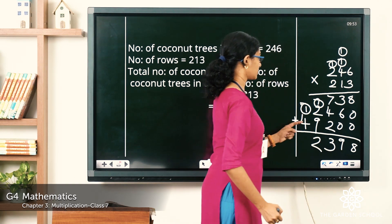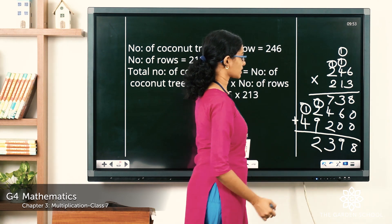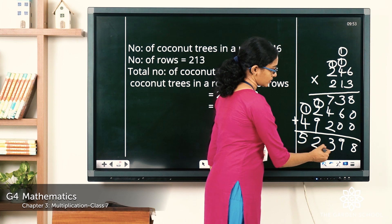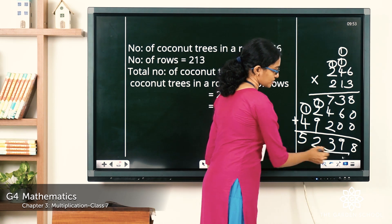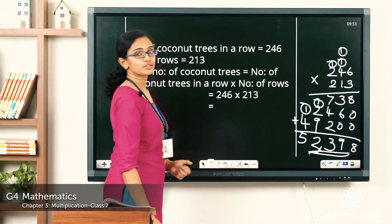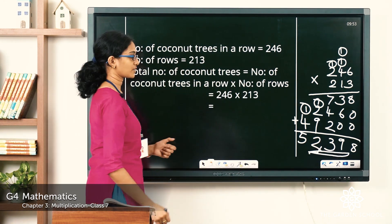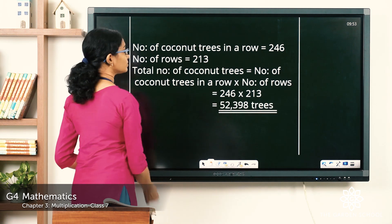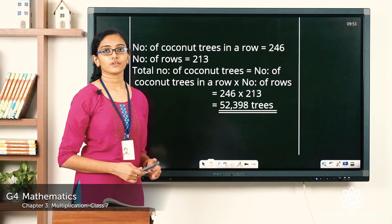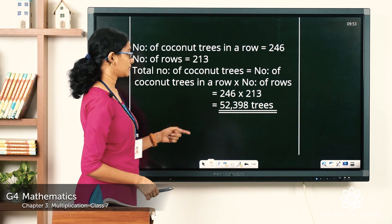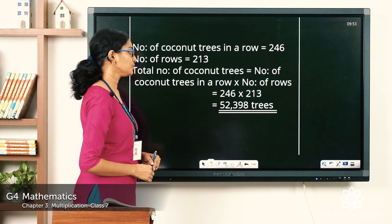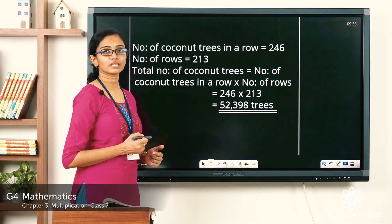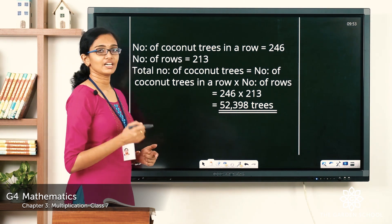Here, 4 plus 1 = 5. So what is the final product? It is 52,398. The total number of coconut trees will be equal to 52,398 trees.